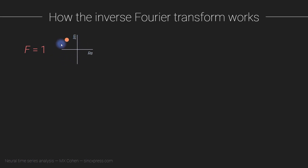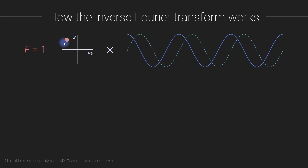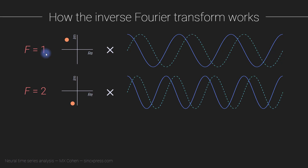What you do is take this Fourier coefficient and multiply it by a template complex sine wave. It's called a template because it doesn't have its own unique amplitude or phase — the amplitude is one and the phase is set to zero. You then modulate this template complex sine wave by the complex Fourier coefficient at that frequency. Then you take another Fourier coefficient at a different frequency and multiply it by another complex sine wave whose frequency corresponds to that coefficient's frequency.